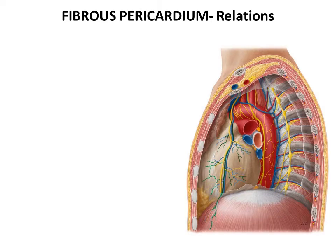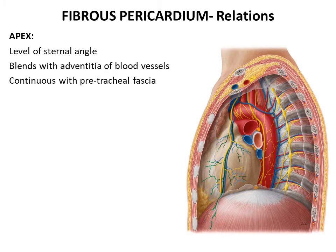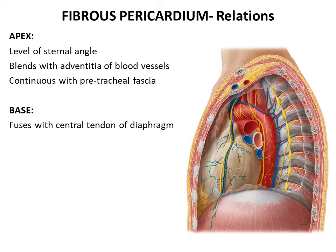The fibrous pericardium is a cone-shaped sac made up of tough fibrous tissue. The apex is truncated and directed superiorly, lying at the level of the sternal angle. It blends with the adventitia of the great vessels — the aorta and the pulmonary trunk — and is also continuous with the pretracheal layer of deep cervical fascia. The base is broad and directed inferiorly, fusing with the upper surface of the central tendon of the diaphragm.